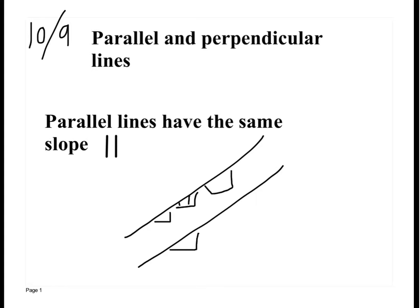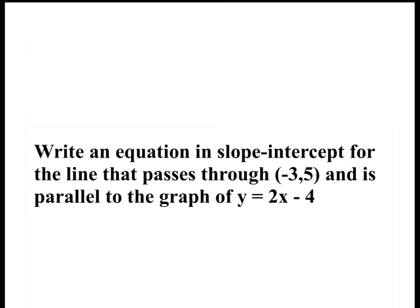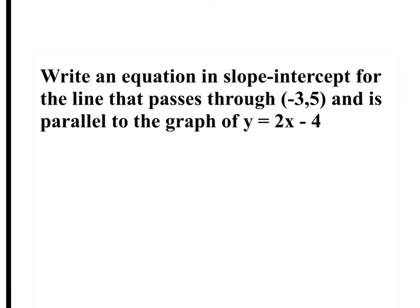The slope does not change — they stay the same. So parallel lines have the exact same slope. You need to write this down.